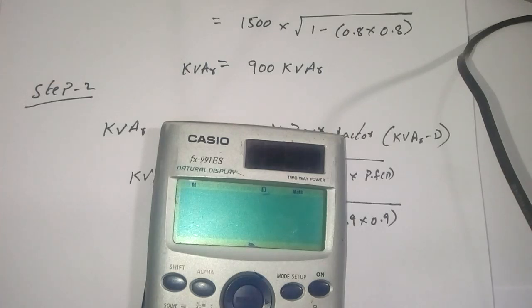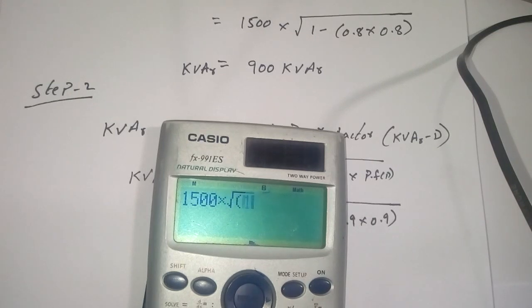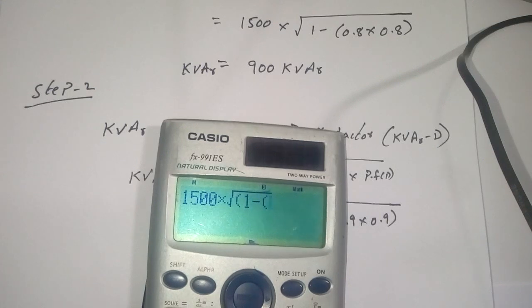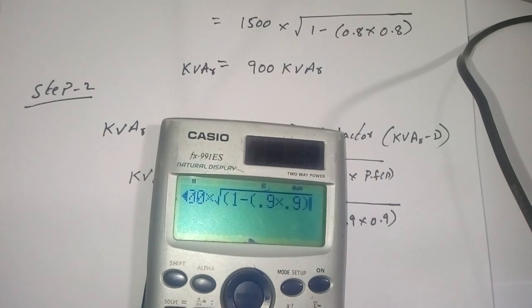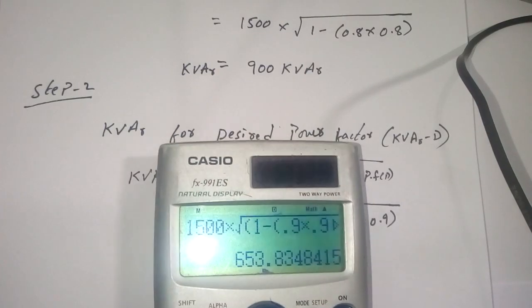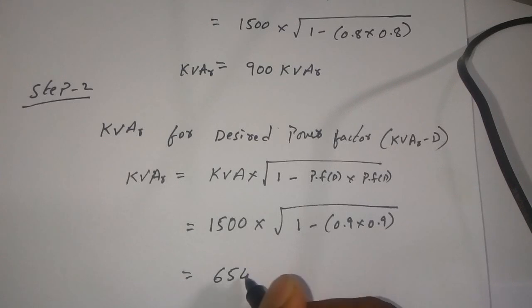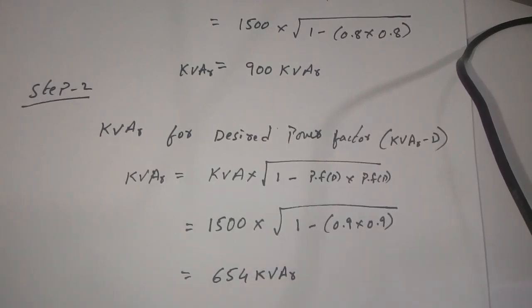Calculating: 1500 × √(1 − 0.9²) gives approximately 653.83, which we round up to 654 kVAR. Step 2 is complete.